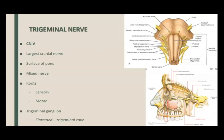Let's start with the fifth cranial nerve, or the trigeminal nerve. It is the largest cranial nerve. It emerges from the surface of the pons. It is a mixed cranial nerve — it has a sensory component and a motor component. The larger root is the sensory root of the trigeminal nerve, and the thin structure is the motor component; together they make up the trigeminal nerve.